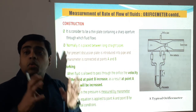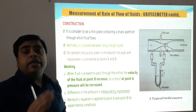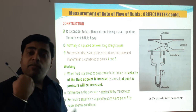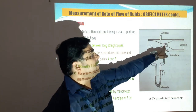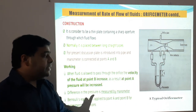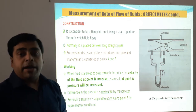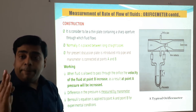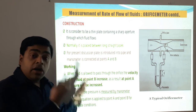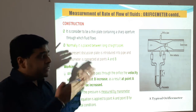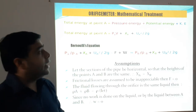When fluid is allowed to pass through the orifice, the velocity of the fluid at point B increases, and as a result the pressure at point A increases. The difference in pressure is measured by the manometer, and Bernoulli's equation is applied to points A and B for the experimental conditions. Bernoulli's equation is applied in each and every measurement here as well.